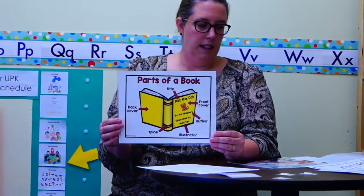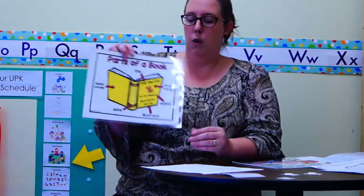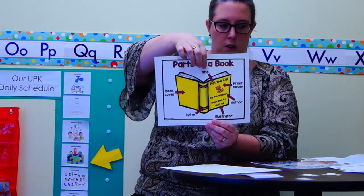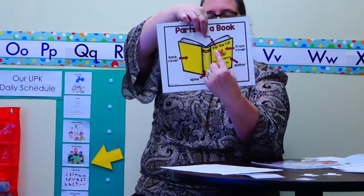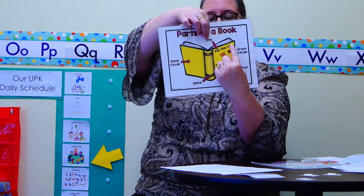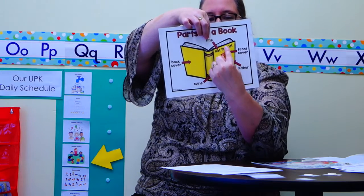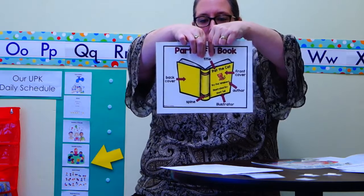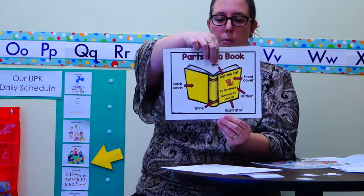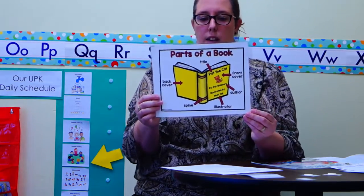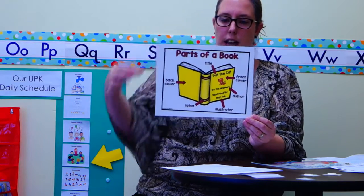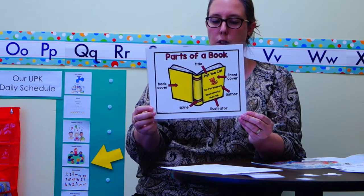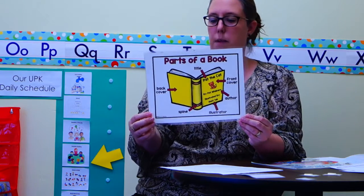On your paper there is a little box pointing to this part of the book. It says 'Pat the Cat,' and right here that is the book's title. Have your grown-up help you find the word 'title' and you can glue it there together. That way, when we're all done, you can hang this up and you'll know the parts of the book when we talk about them here at UPK.